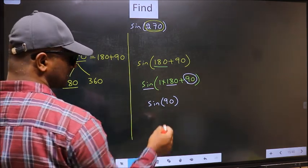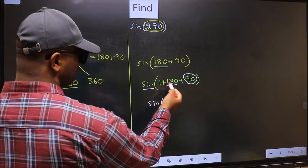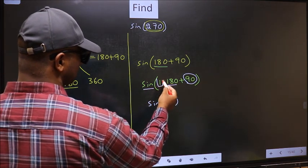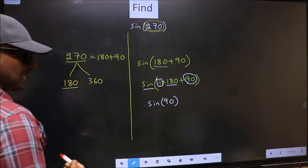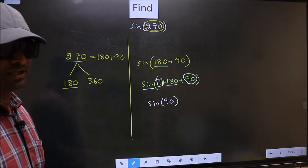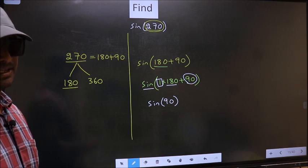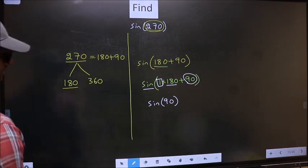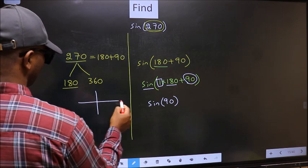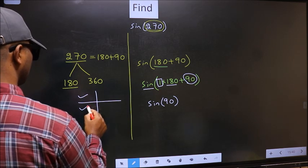To answer that, we should look at the number before 180. That is 1. And 1 is odd. And all the odd multiples of 180, they lie either in the second or in the third quadrant.